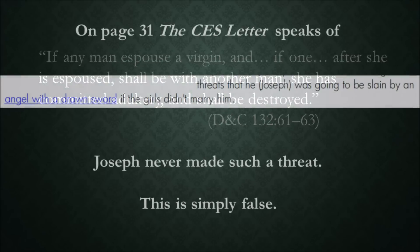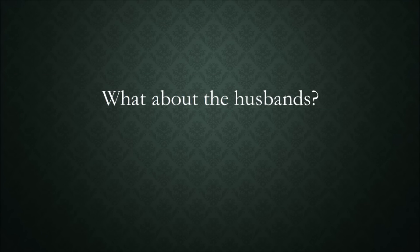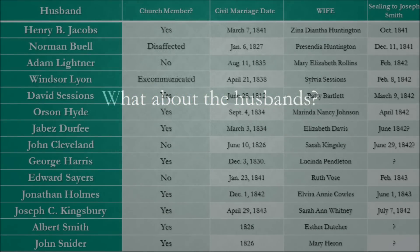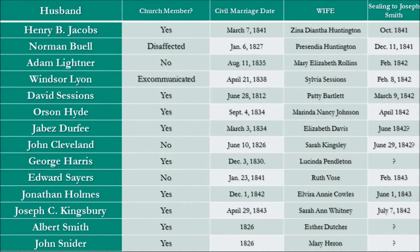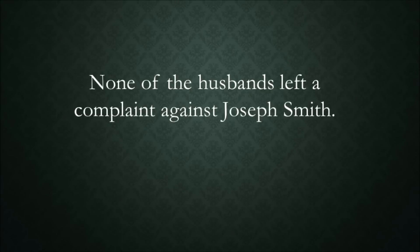On page 31, the CES Letter speaks of threats that Joseph was going to be slain by an angel with a drawn sword if the girls didn't marry him. Joseph never made such a threat — this is simply false. What about the husbands? Little is known about most of the men's awareness of the sealings when they occurred, except none of them left a complaint against Joseph Smith.